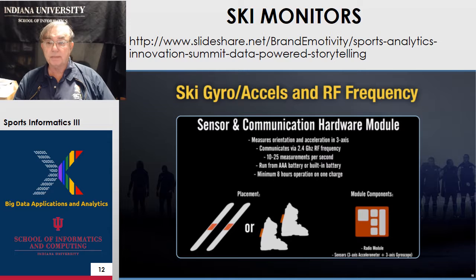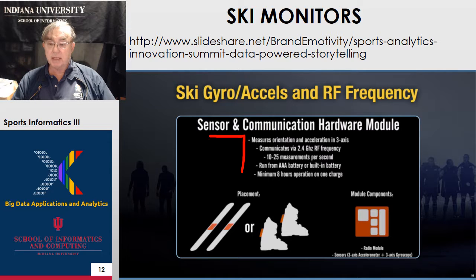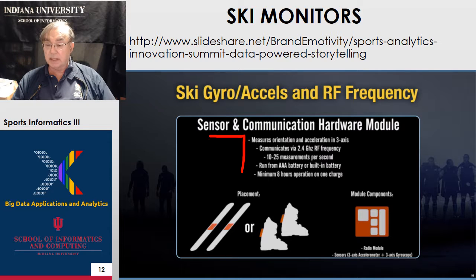Here's another example of a consumer sensor — this is effectively a sensor-enabled ski device. It has a battery that lasts 8 hours, and it sends back by wireless all sorts of information about your acceleration and orientation. Skiing is a pretty tricky sport, and knowing more about exactly where you are and what you're doing can be pretty helpful. So we have a three-axis gyroscope and a three-axis accelerometer.